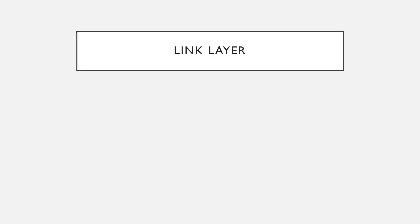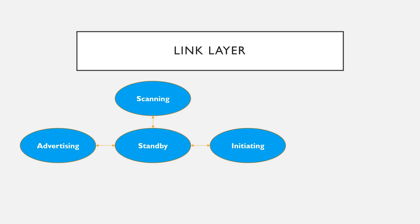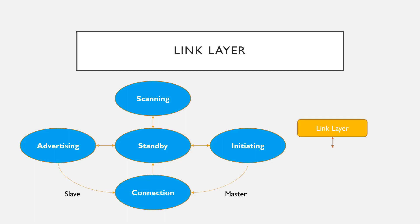Now let's understand what the link layer is responsible for. The link layer is majorly responsible for advertising, scanning, and for creating and maintaining connections. It sits on top of the physical layer, and thus it specifies the on-air interface.